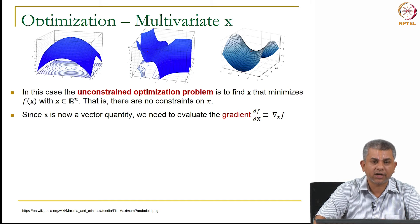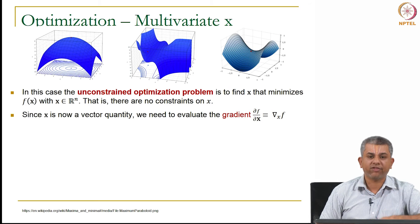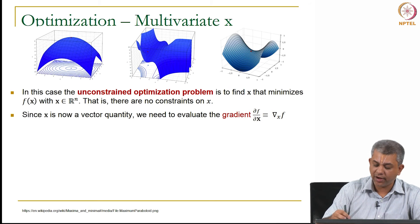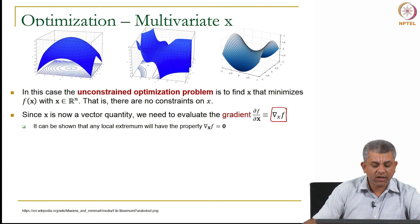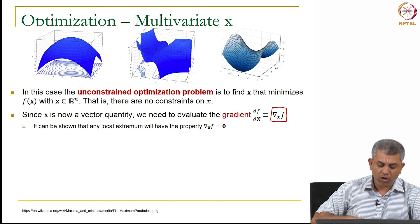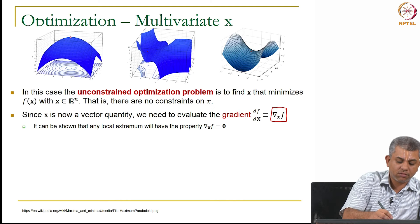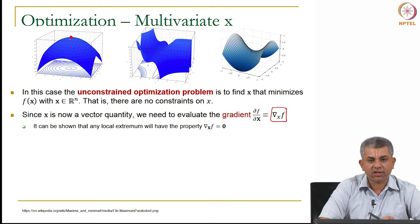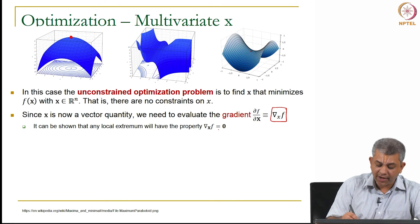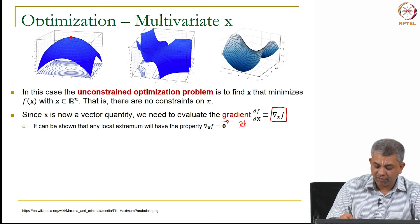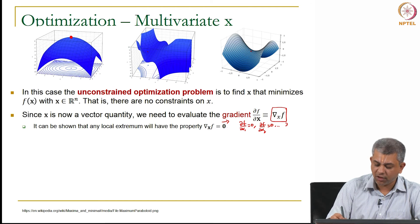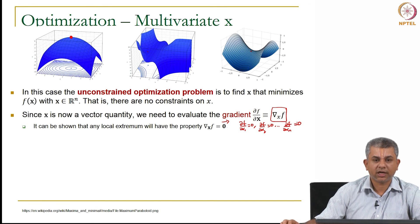Now as we saw in the derivative and gradient slides, since now x is a vector quantity you will now have to evaluate instead of simply df dx, you have to now evaluate the gradient of f. So in analogy to what we saw earlier, any local extremum will have the gradient equal to 0. Remember this is the 0 vector which means del f del x1 will be 0, del f del x2 will be 0, so on and so forth. If it is an n dimensional vector x, del f del xn is actually going to be 0.